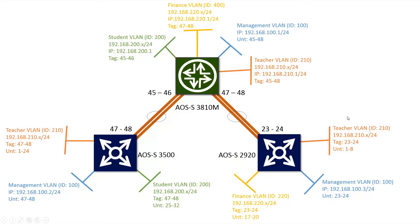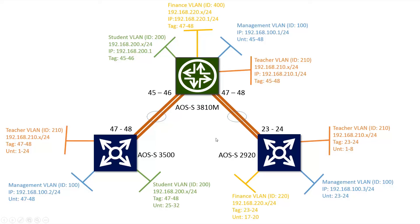The teacher VLAN has VLAN ID 210 and is present on every switch — the 3500, the 2920, and the core switch. If devices in the teacher VLAN on the 2920 want to communicate with devices in the teacher VLAN on the 3500, they don't need to be routed — they can simply be switched because they are in the same VLAN.